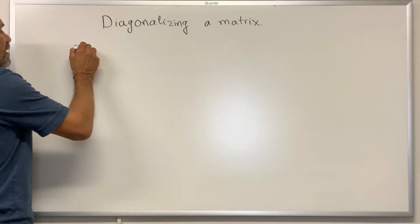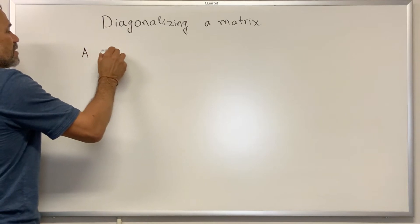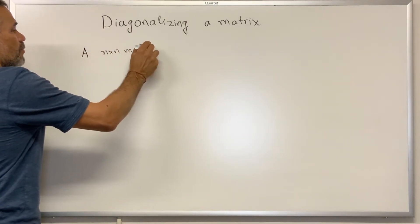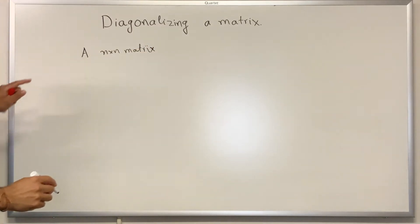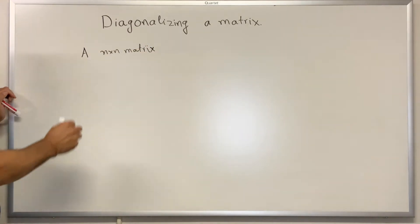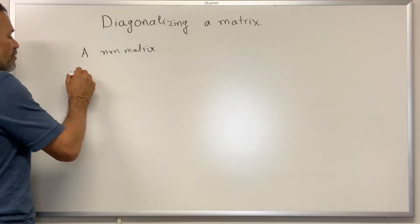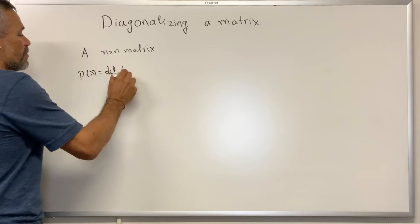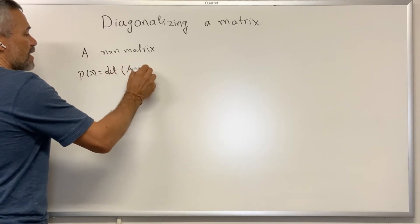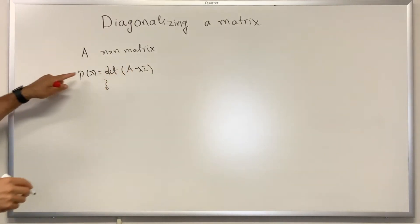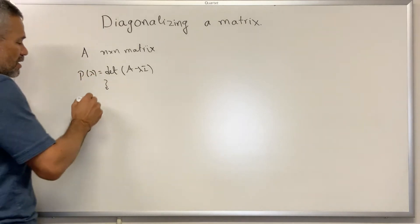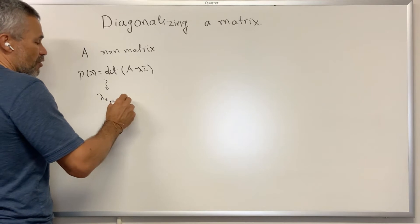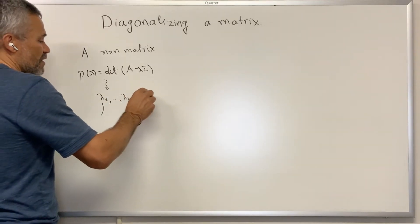Let's suppose that we have an n by n matrix, and we are wondering if we can diagonalize this matrix. Then what we need to do is we compute the characteristic polynomial, which is p of lambda equal to the determinant of A minus lambda I, and then we find the roots of this polynomial. These are the complex and real roots, and these are called the eigenvalues.